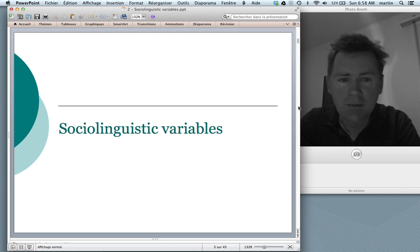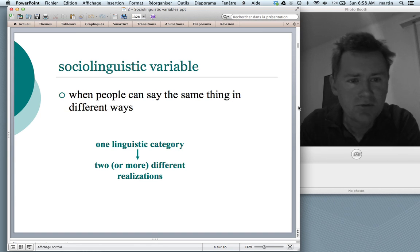Let's start talking about sociolinguistic variables. A very simple but very fitting definition of a sociolinguistic variable would be that when people can say the same thing in different ways, then you have discovered a sociolinguistic variable. More formally expressed, when we have a linguistic category and this linguistic category can be realized by speakers in two or more different ways, that's a sociolinguistic variable.